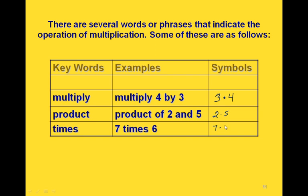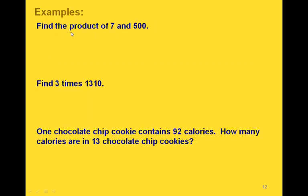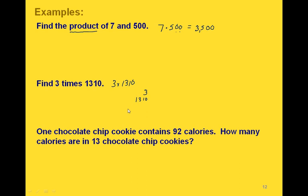Let's do a couple of examples. To find the product of 7 and 500, 'product' means we're taking 7 times 500. Since we have two zeros, we write them as placeholders and just multiply 7 times 5, giving us 3,500. To find 3 times 1,310: 3 times 0 is 0, 3 times 0 is 0, 3 times 1 is 3, 3 times 3 is 9, and 3 times 1 is 3. So our product is 3,930.